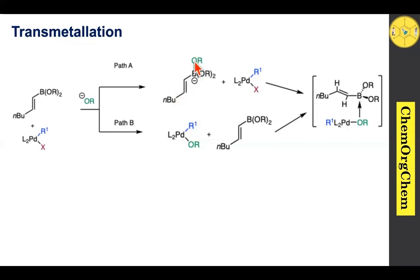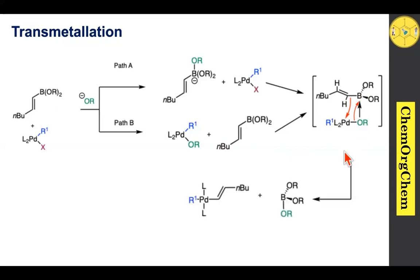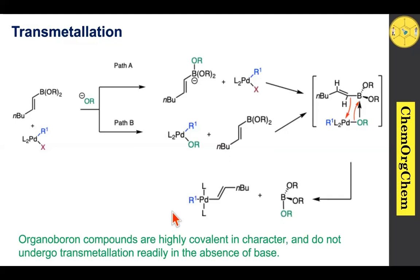Both routes ultimately converge to provide the same transition state. In path A, the alkoxy (OR) group interacts with palladium to form the transition state; alternatively, the alkoxy group interacts with the borate part to produce the same transition state. The OR group enhances the nucleophilic character of that particular carbon, which then attacks the palladium species, followed by cleavage of the palladium-oxygen bond and formation of the boron-oxygen bond. Organoboron compounds are highly covalent in character, so without base the reaction does not occur — the base is crucial for the Suzuki reaction.